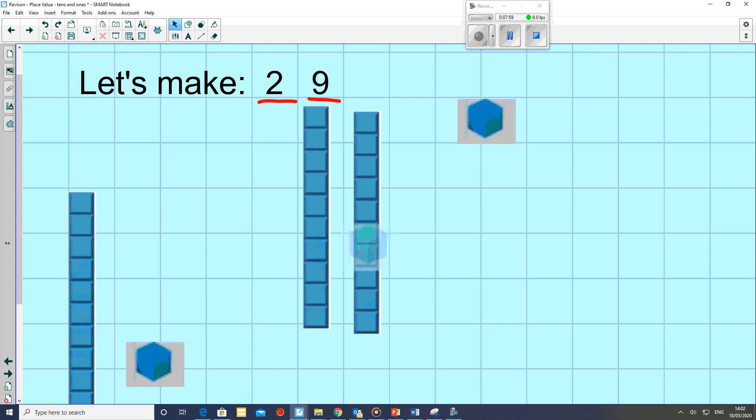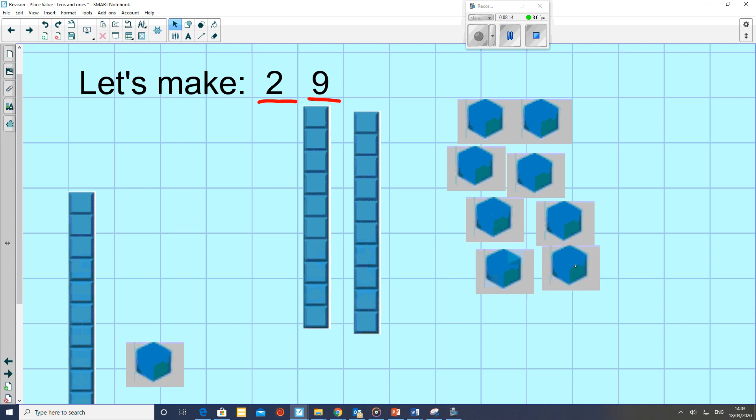So I've got 1, 2, 3, 4, 1, 2, 3, 4, 5, 6, 7, 8, 9. 9 ones. Okay.